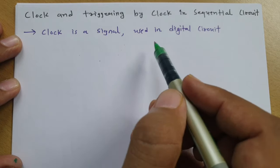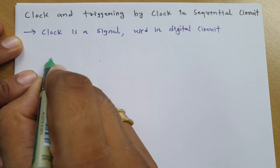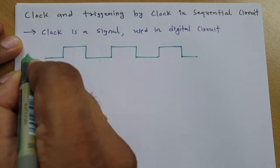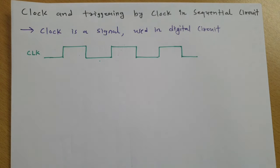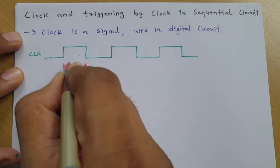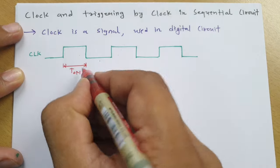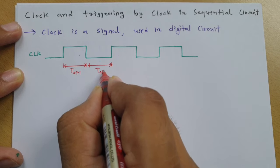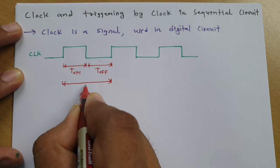A clock signal is used in digital circuits and it is a square wave, as you can see here. This is the CLK clock signal. If you observe this clock signal, during this time period you can say this is the T_on time period — the reason being that during this time the output is high. And during this time period the output is low, so we can say this is the T_off time period. The total time period T equals T_off plus T_on.